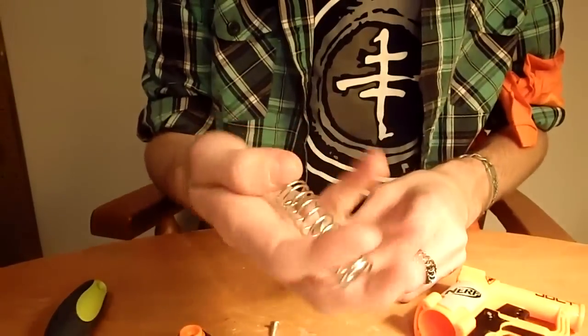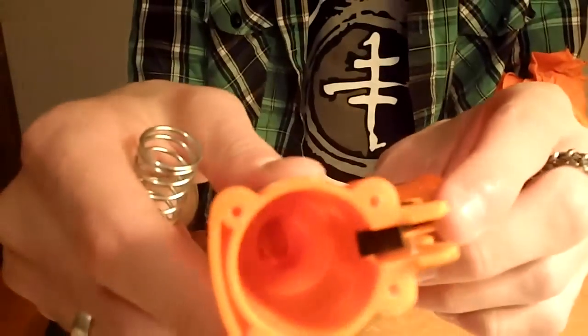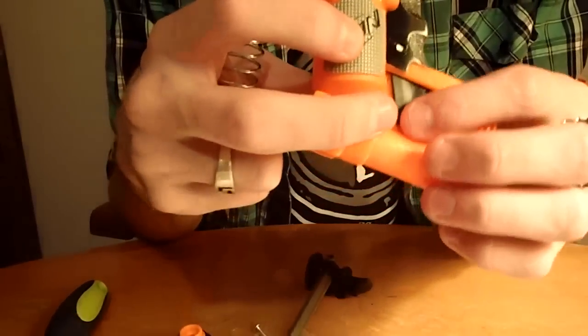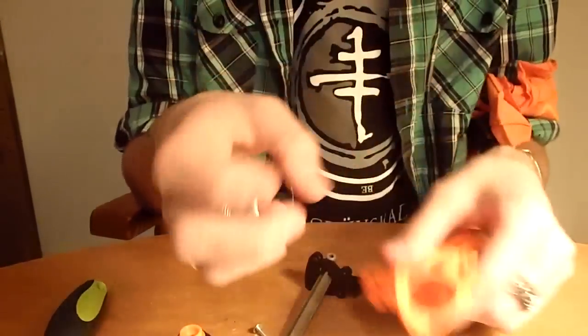That's how you get it apart. And that's about as far as this blaster will break down. You can see down into there that there is an air restrictor that I will be removing entirely, either with my Dremel bit or I may try and hammer it out.